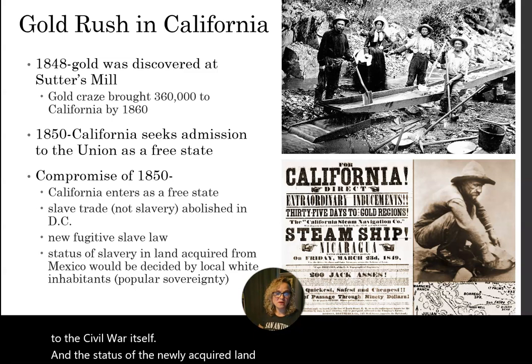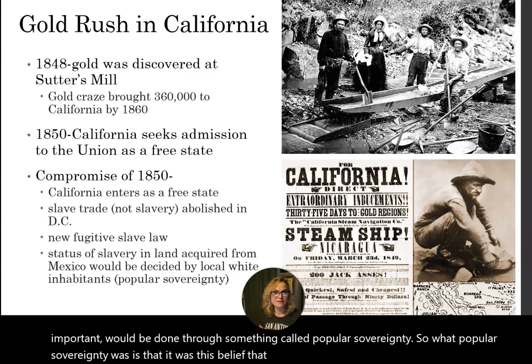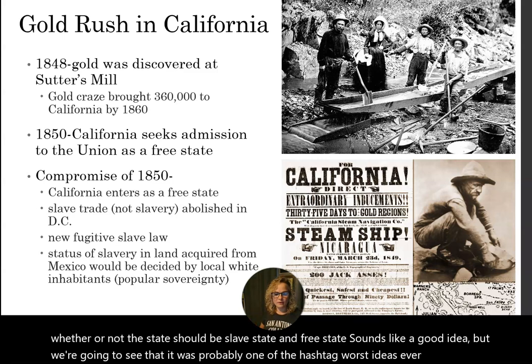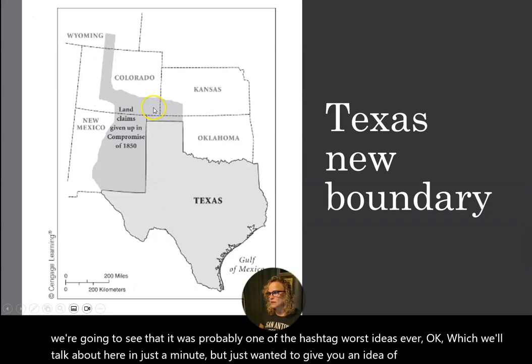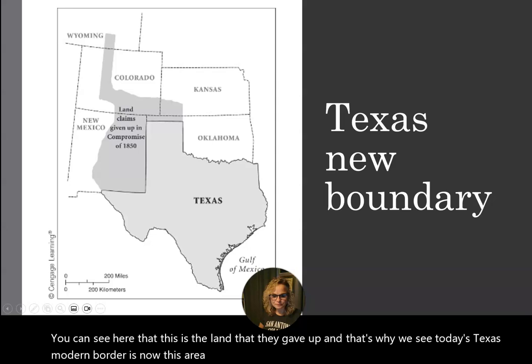The status of the newly acquired land from the Treaty of Guadalupe Hidalgo would be determined through something called popular sovereignty — the belief that the people of that state should decide whether it would be a slave state or free state. It sounds like a good idea, but we're going to see that it was probably one of the worst ideas ever. Also, this settled Texas's new boundary — you can see the land they gave up, and that's why we see today's modern Texas border.